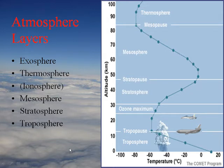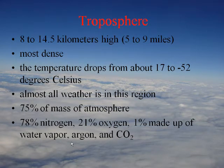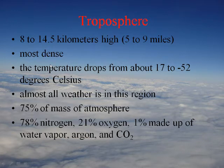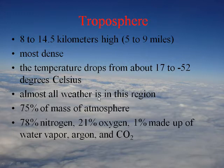The troposphere starts at the earth's surface — zero miles — and goes up to between five and nine miles, depending on location. At the poles it's thinner, only about five miles; near the equator it extends up to about nine miles. This is the most dense layer, where temperature decreases as you go up. This is where all the weather happens — about 75 percent of the mass of the atmosphere is here.